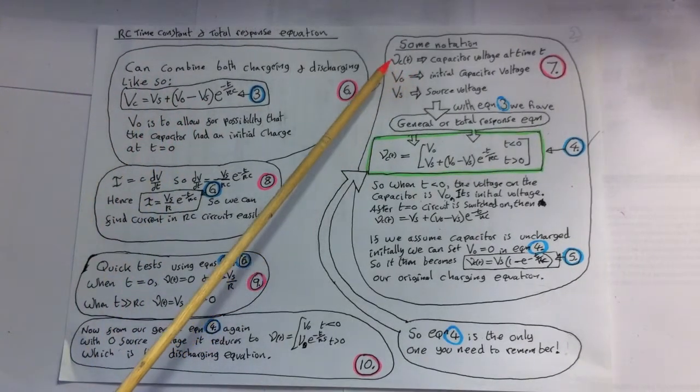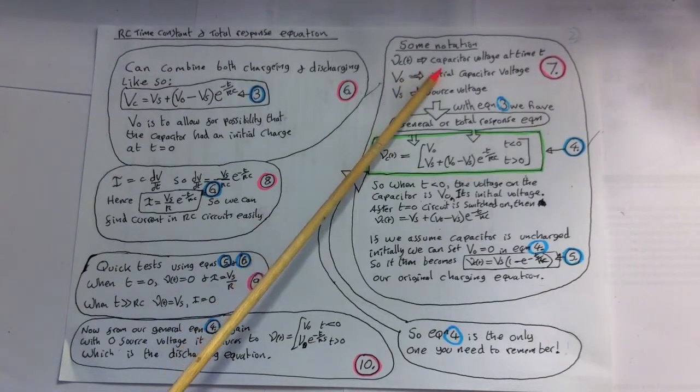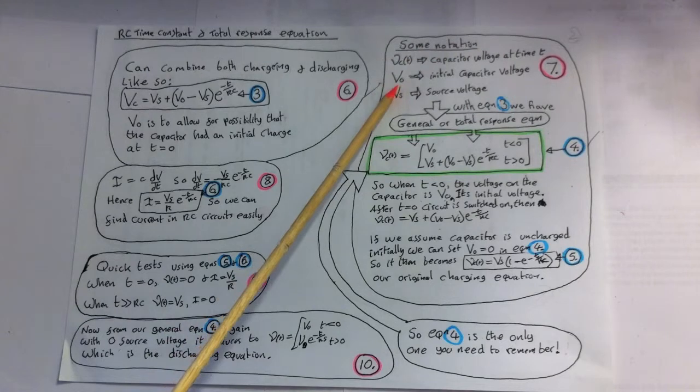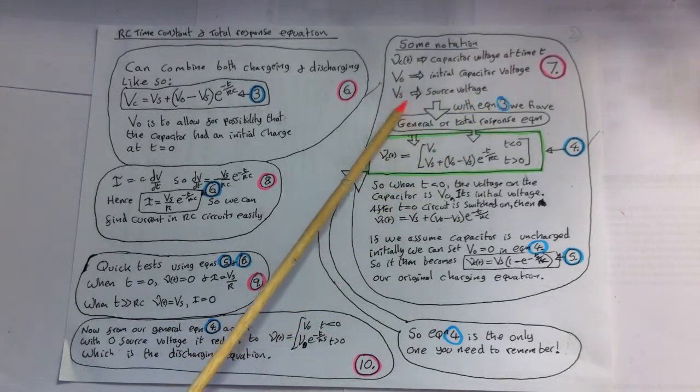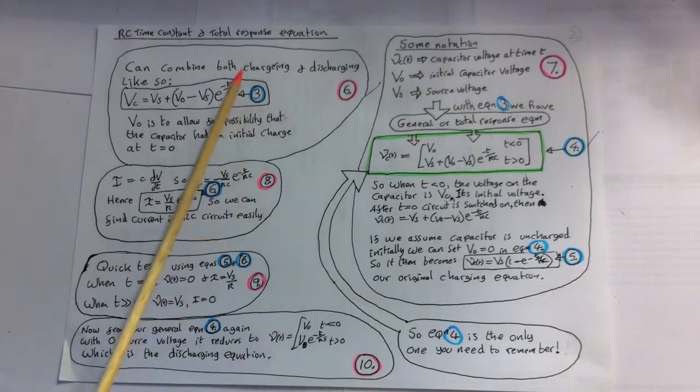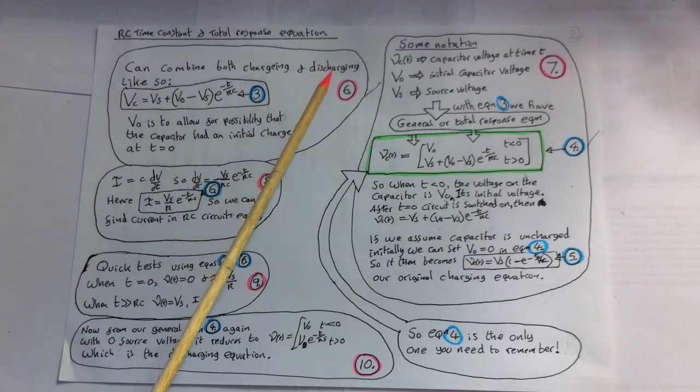Let's first use the following notation. Little VCT is the capacitor voltage at time equals T. Capital V0 is the initial capacitor voltage, and capital Vs is the source voltage. So now we can rewrite this equation 3 in a more general way, like so.